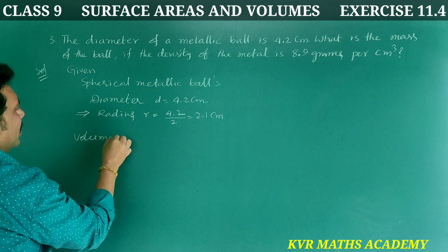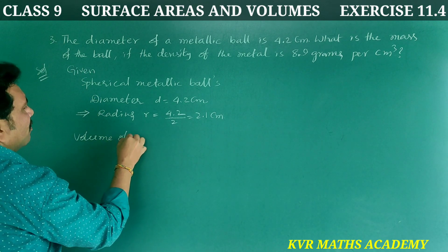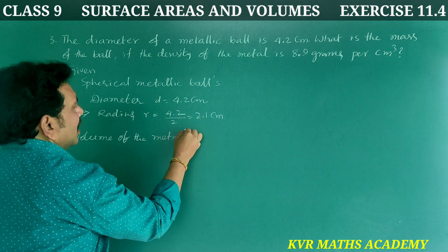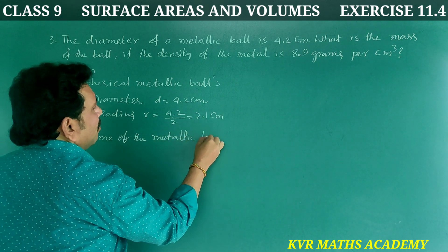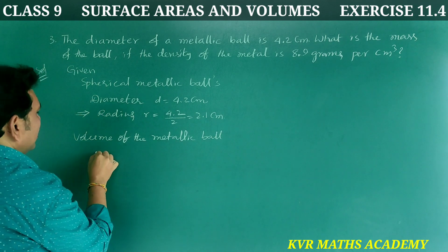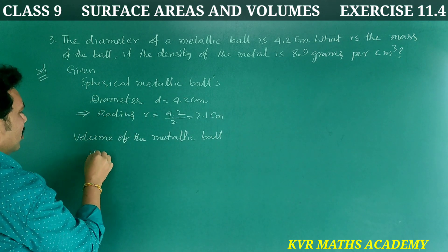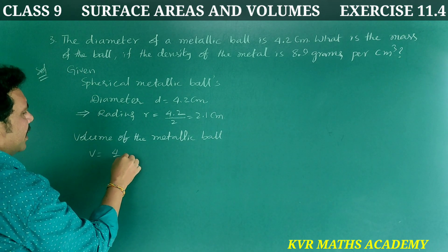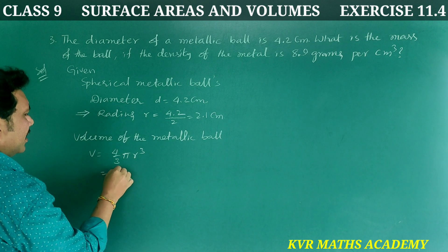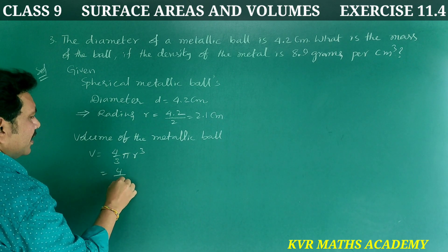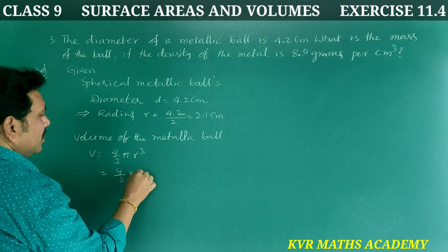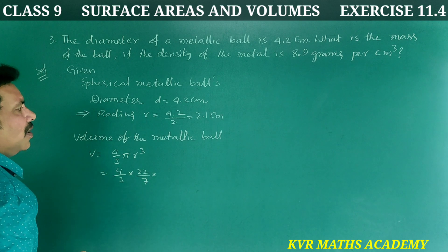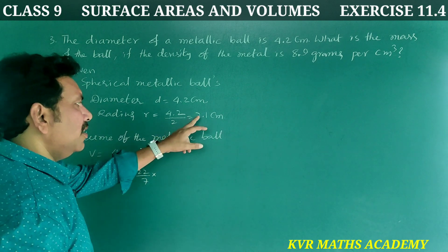Volume of the metallic ball is equal to V equals 4 by 3 pi R cube. That is equal to 4 by 3 into 22 by 7 into R cube, where R is 2.1.